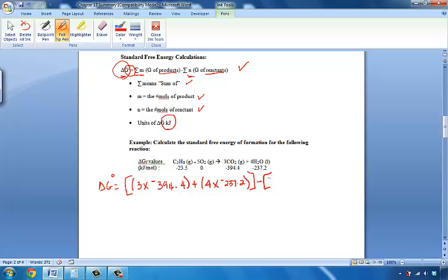We'll subtract out the sum of all of our reactants, which will be only one mole of the propane, so one times negative 23.5. And last of all will be the value for five moles of oxygen, which are zero, so five times zero, which we know is zero, but we'll put it there just for the sake of completion.